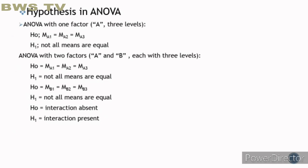Hypothesis in ANOVA with one factor. Factor A has three levels. Your null hypothesis is that all A levels are equal, and your alternative hypothesis is that not all means are equal.